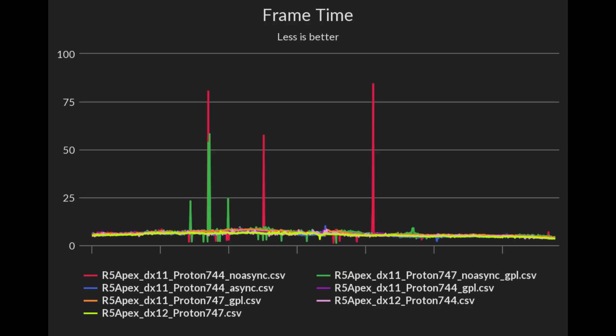In this graph we are looking at all frame times and just like the FPS benchmarks, DX12 or GPL is clearly the way to go on Apex Legends if you want a smooth gaming experience. However, as previously mentioned, async does have some drawbacks.